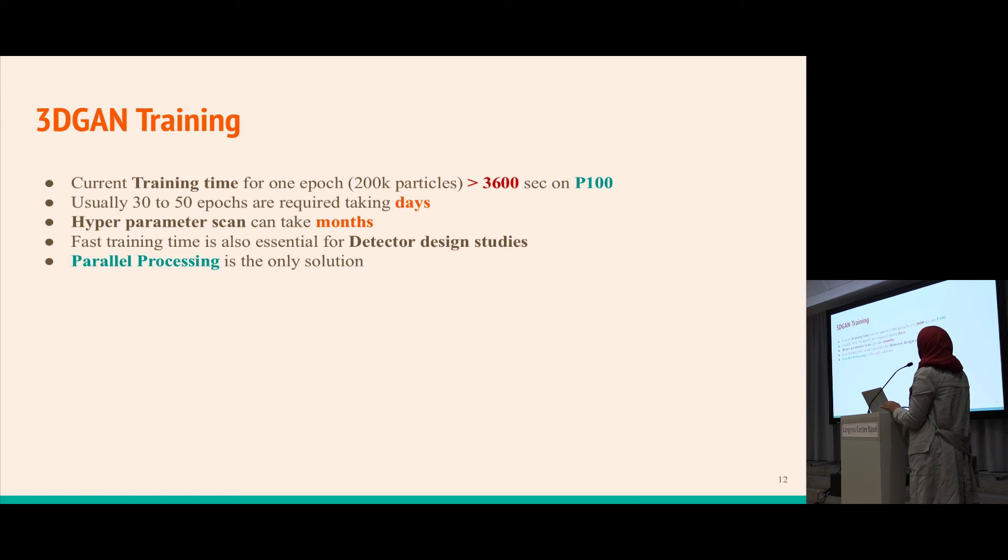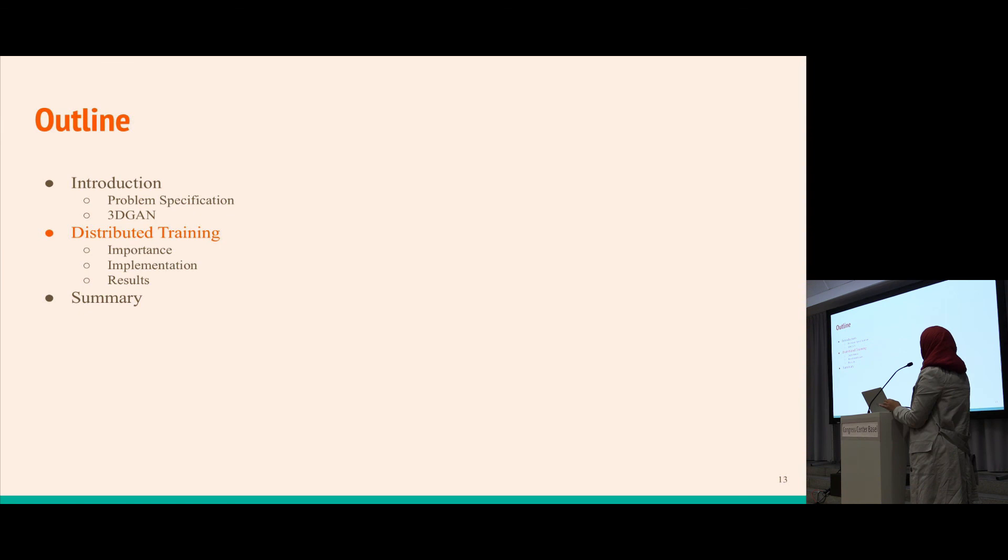It usually takes about 30 to 50 epochs, so it takes around days. If we design a hyperparameter scan it can take up to months. It's essential to somehow speed up this training process. There can be other use cases like detector design studies. Parallel processing is the only solution, so the second part of the talk is about distributed training.